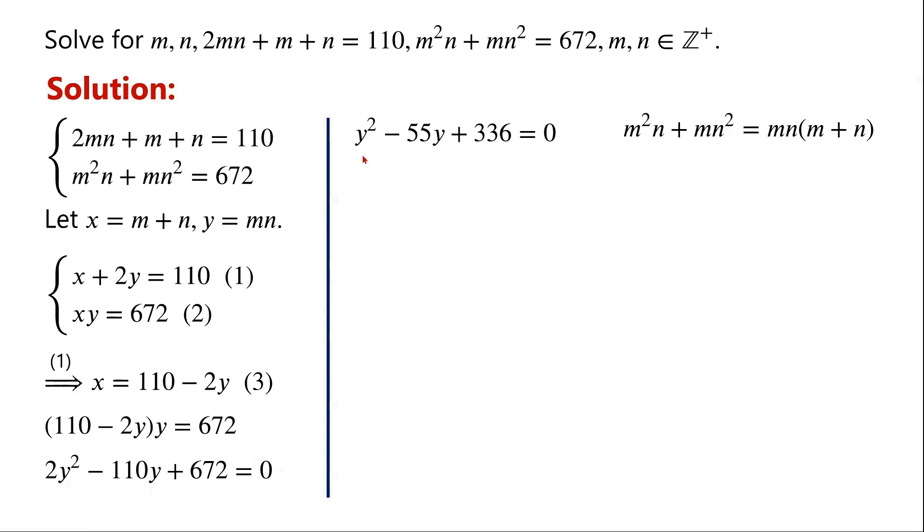We divide the equation by 2, and get Y squared minus 55Y plus 336 equals 0. Factorize the equation and write Y minus 7 times Y minus 48 equals 0. So Y1 equals 7, Y2 equals 48.